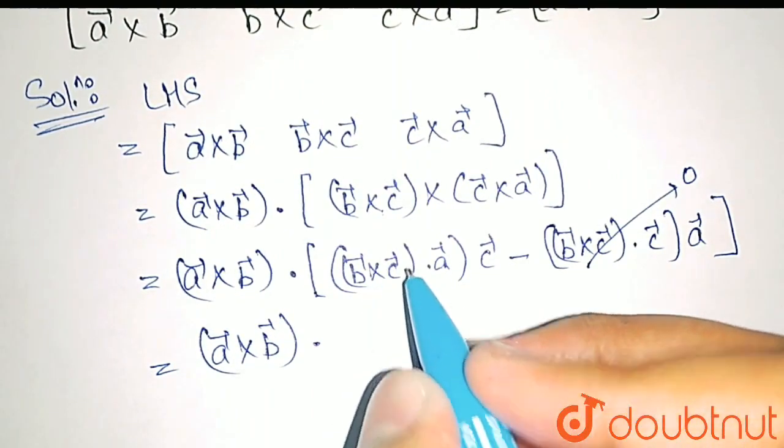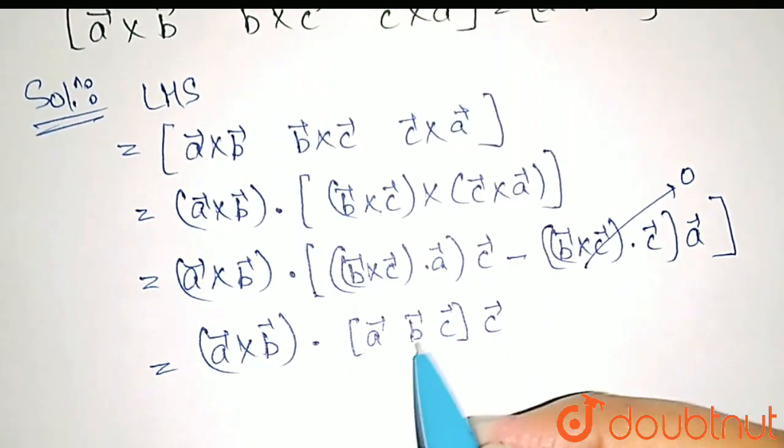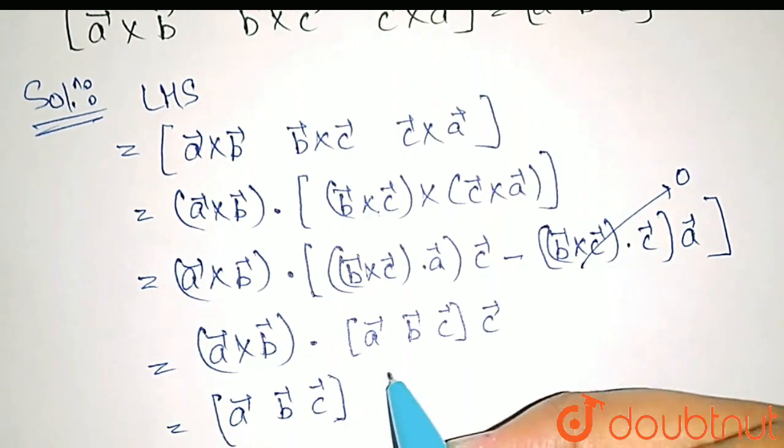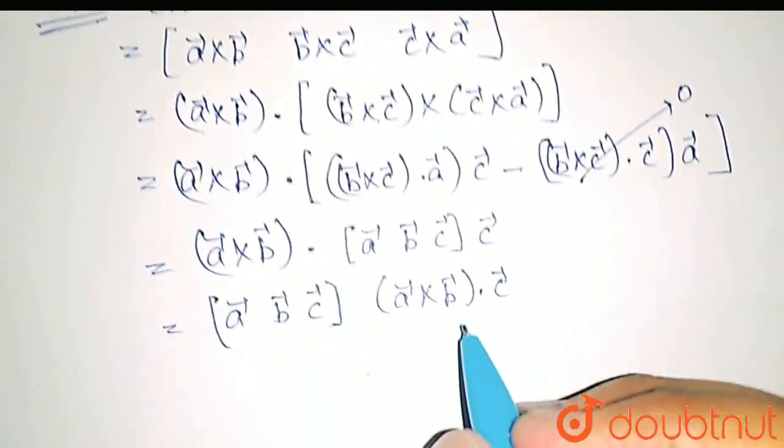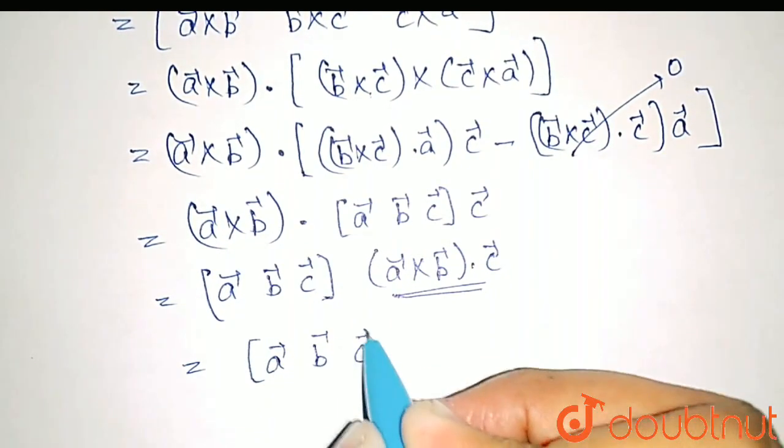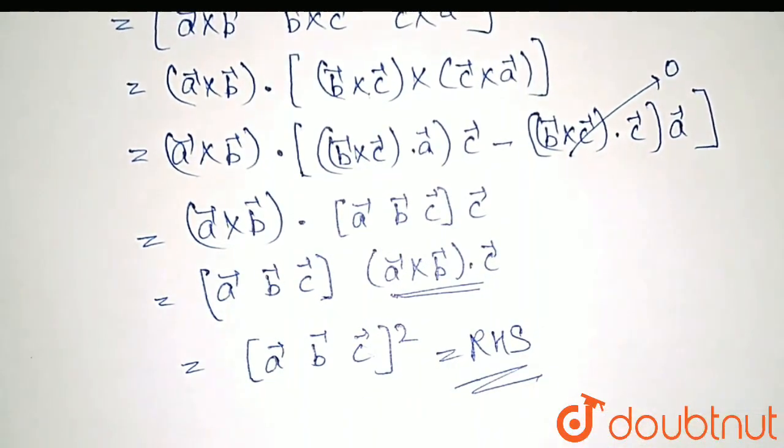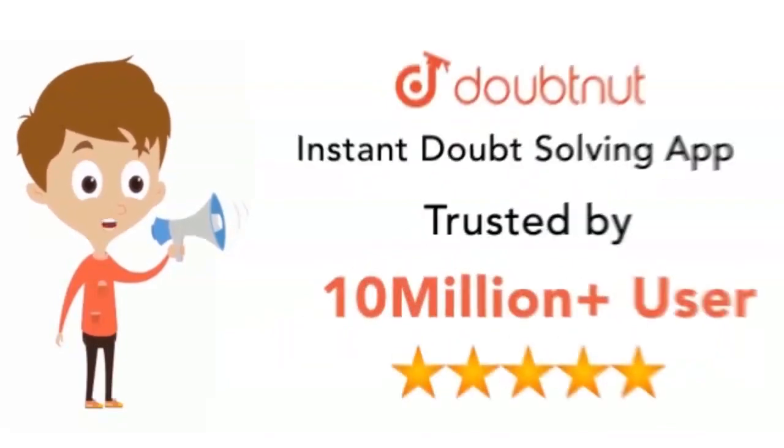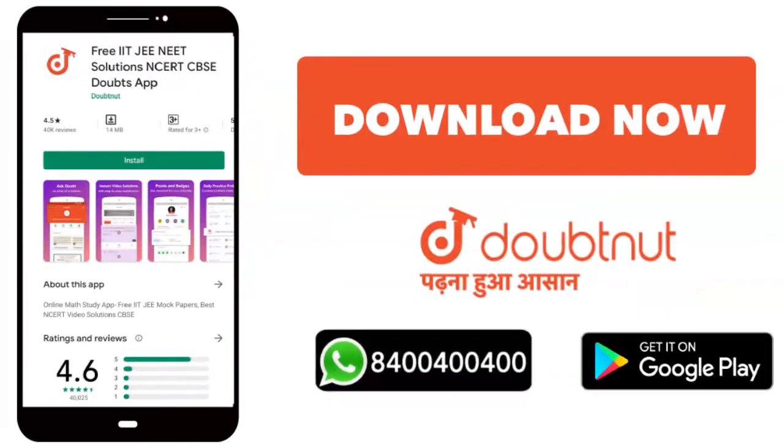This is scalar triple product of A, B and C. We will get the final result which is equal to RHS. Thank you.